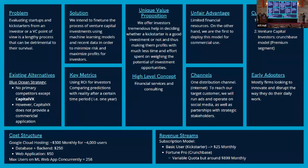Our cost structure is about $300 monthly for 4,000 users on Google Cloud, divided into $250 for the database and backend, and $50 for the web application. The maximum concurrent users on the ML web app is 256, which is currently a bottleneck. Our revenue streams come from our subscription model: the basic user subscription is $25 monthly, and the Fortune Pro subscription is a variable quota at around $900 monthly.